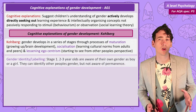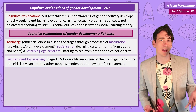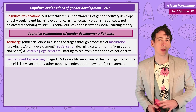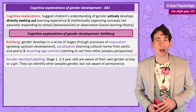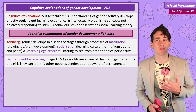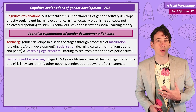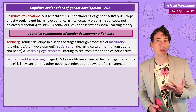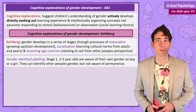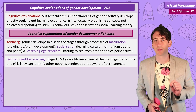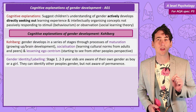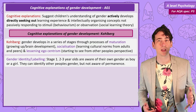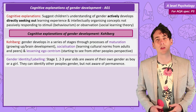In the first gender identity or labelling stage, which happens between 2 and 3 years old, children are not only able to simply identify themselves as a boy or a girl, but they can also label other people's gender identity. But importantly, they are not aware that their gender or other people's gender is a permanent state.